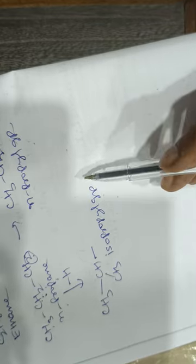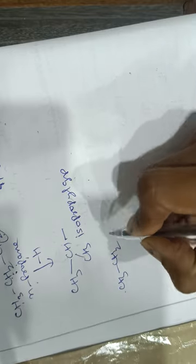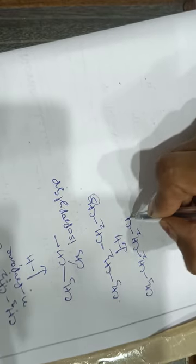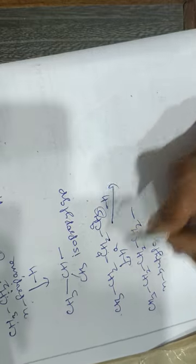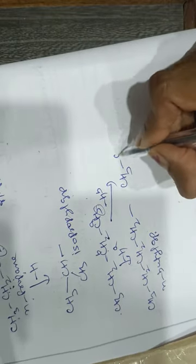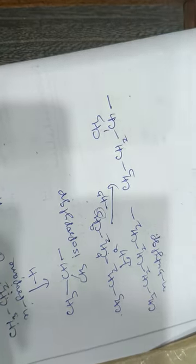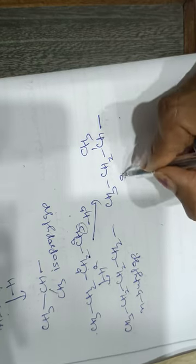Similarly, if it is butane — CH3–CH2–CH2–CH3 — this is normal butane. If a hydrogen is removed from the terminal carbon, we get the normal butyl group. If instead we remove a hydrogen from the secondary carbon — that is, the carbon attached to two other carbons — then we get the secondary butyl group.